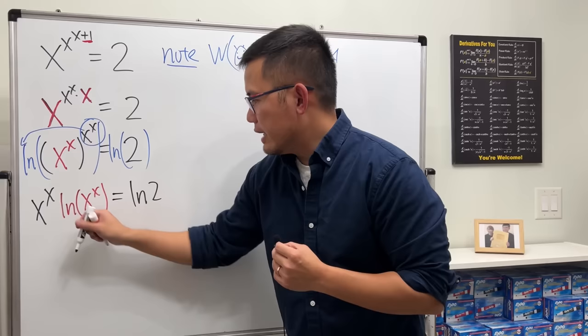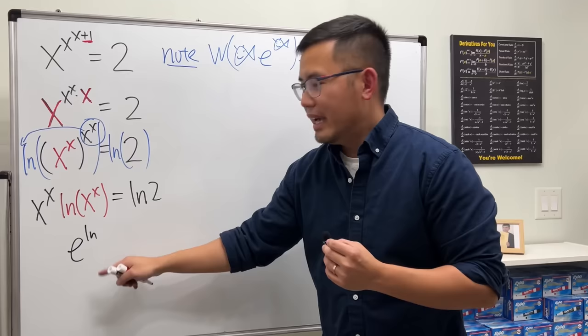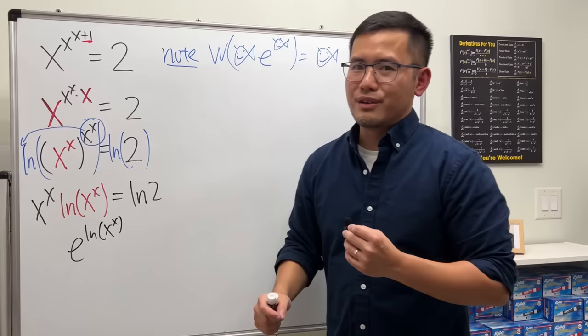We can write x to the x as e and ln cancel, so we can put that down, and then just put the x to the x inside. So this part is the same as that. Perfect. And then, of course, we still have ln of x to the x, so just write that down.